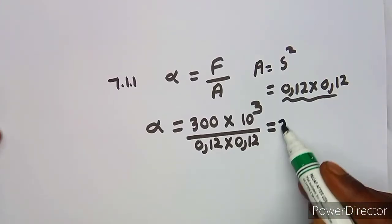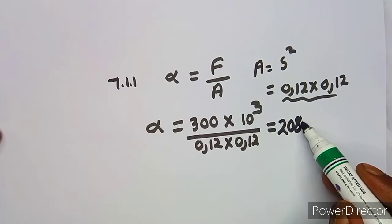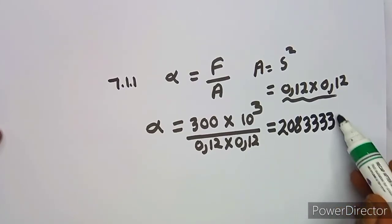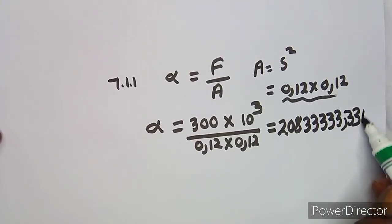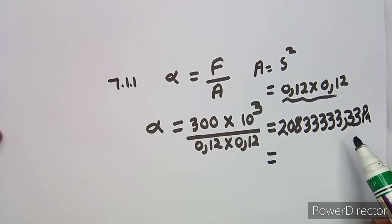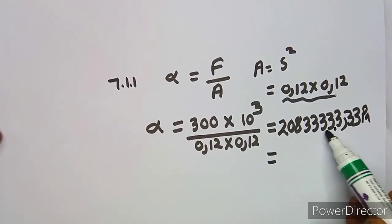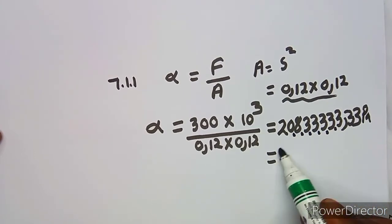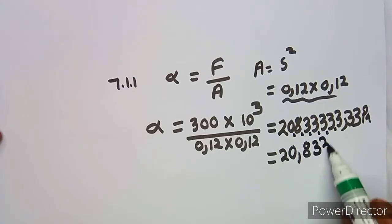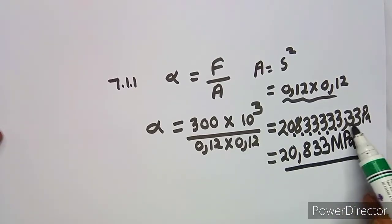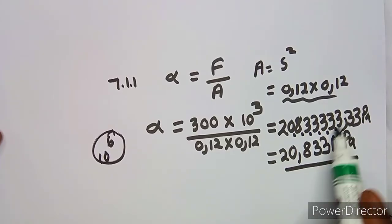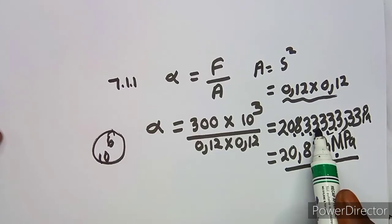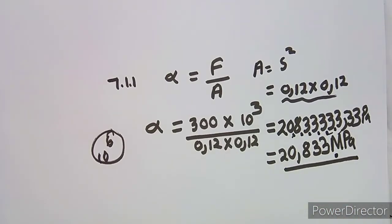When you evaluate that, you get approximately 20,833,333 pascals. To convert to megapascals, divide by one million — that is, move the decimal point six places — giving approximately 20.83 megapascals. That was the stress for this part.